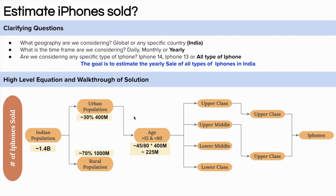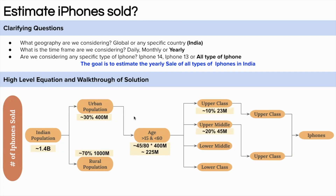Now we bifurcate them into upper class, upper middle class, lower middle class, and lower class. Let's assume 10% belong to upper class — that gives around 22.5 million, rounded to 23 million. 20% belong to upper middle class — around 45 million. 30% belong to lower middle class — around 67 million. And 40% belong to lower class — around 90 million.